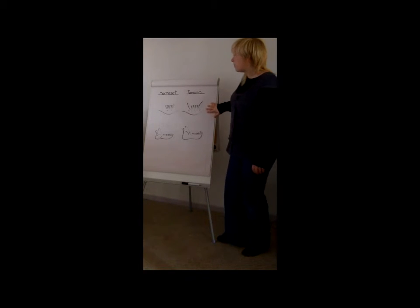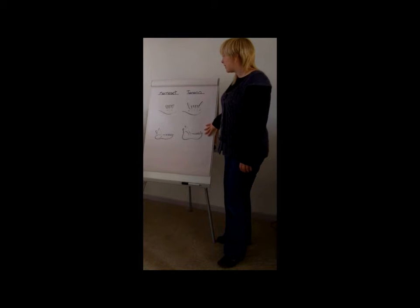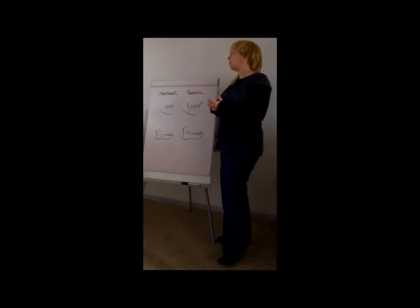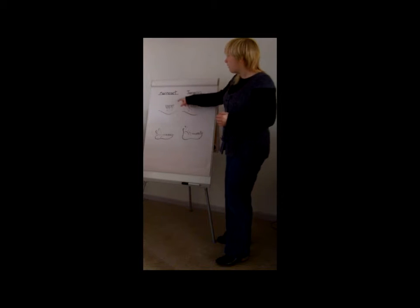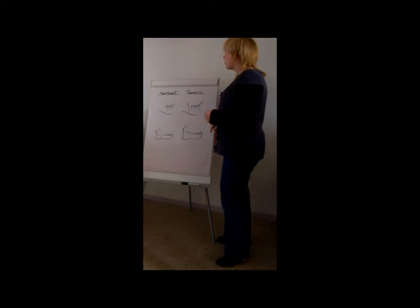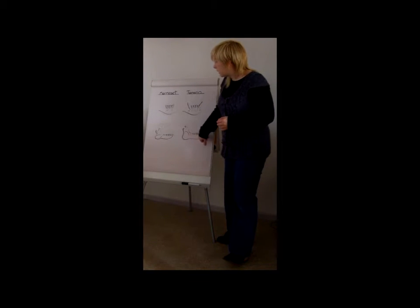Carrying on with the teeth theme, if we look now at marmosets and tamarins, these are both very small primates that a lot of people have difficulty telling the difference between. But if you look at the jaws and the teeth they're quite easy to tell apart. The marmoset is known as the short tusked because it doesn't have these great big canine teeth that the tamarins do. And you can see that again from the side view.